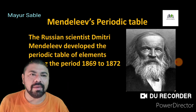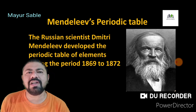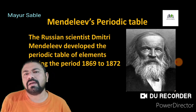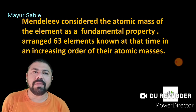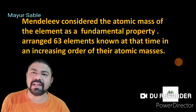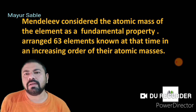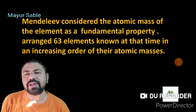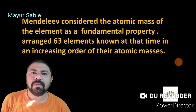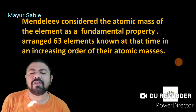Mendeleev was a Russian scientist whose full name was Dmitri Mendeleev. He developed the periodic table of elements during the period of 1869 to 1872 AD. Mendeleev's periodic table is the most important step in the classification of elements because he considered the atomic mass of an element as the fundamental property.